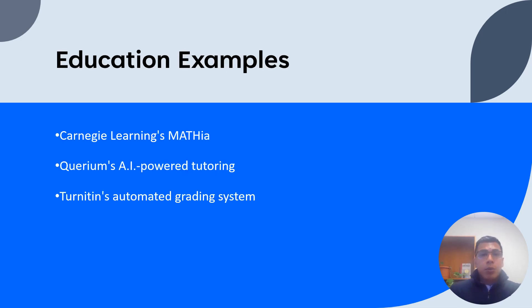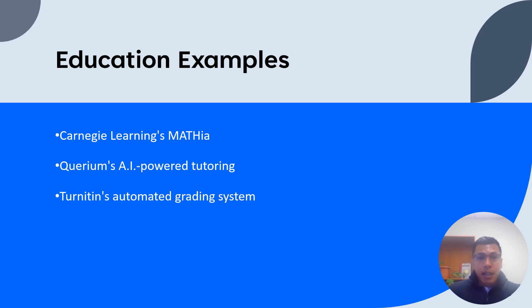Let's look at some real-world examples of AI in education. The first is Carnegie Learning's Mathia. Mathia is an AI-powered math learning platform that offers personalized instruction to students. By analyzing student performance data, Mathia adapts the content and pacing to each learner's needs, helping them master mathematical concepts more effectively. The second is Querium's AI-powered tutoring. Querium offers an AI-driven tutoring platform that provides personalized step-by-step guidance to students in subjects such as math, science, and engineering. By analyzing students' work in real time, Querium's virtual tutor can offer tailored feedback and support, promoting a deeper understanding of the material.